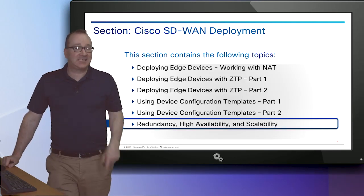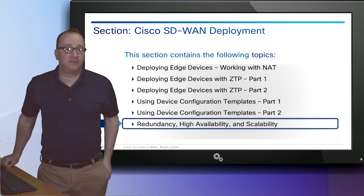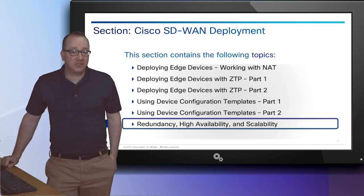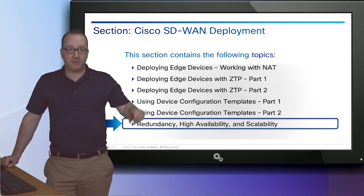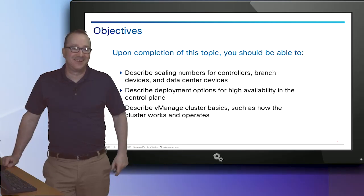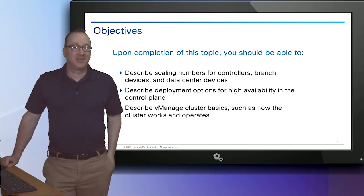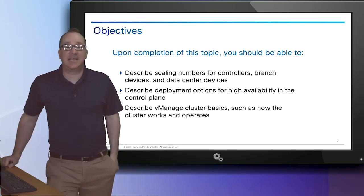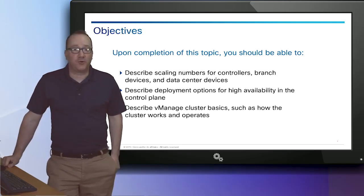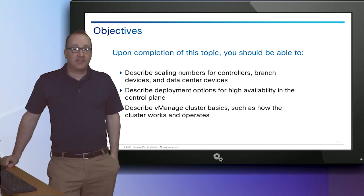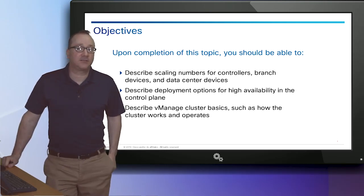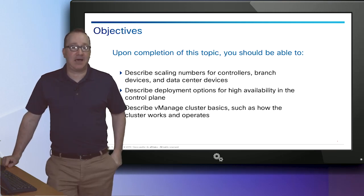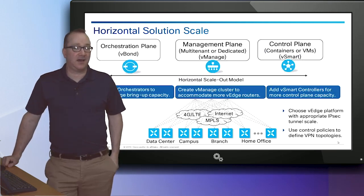This is the last section of this section. After this, we should be able to describe the scaling numbers for controllers, branch devices, and data center devices, and describe the deployment options for high availability in the control plane. We're also going to talk about vManage cluster basics, such as how the cluster works and operates.